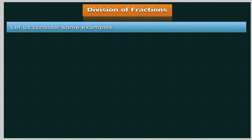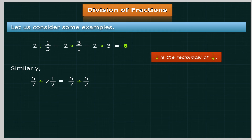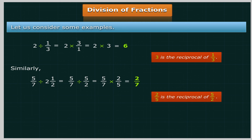Division of Fractions: To divide fractions, we multiply by the reciprocal of the divisor. For example, 2 divided by 1 upon 3 equals 2 multiplied by 3 upon 1, which equals 6 (since 3 is the reciprocal of 1 upon 3). Similarly, 5 upon 7 divided by 2½ equals 5 upon 7 divided by 5 upon 2, which equals 5 upon 7 multiplied by 2 upon 5 (the reciprocal of 5 upon 2), which equals 2 upon 7.